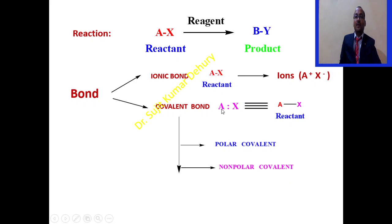When the electronegativity difference between two atoms will be different or they are having different electronegativity values, then that leads to polar covalent bond. When the electronegativity of atom A and X will be same, then that leads to non-polar covalent bond.